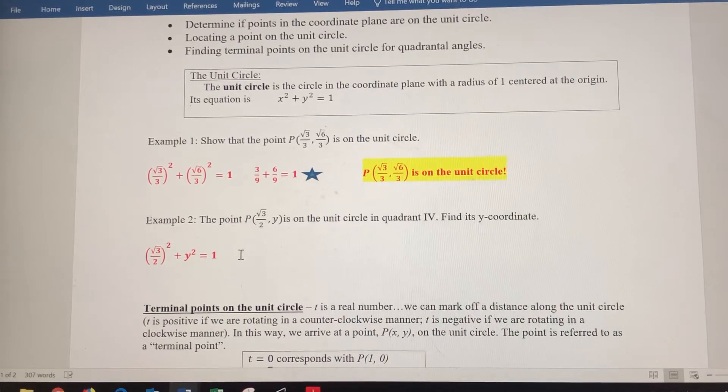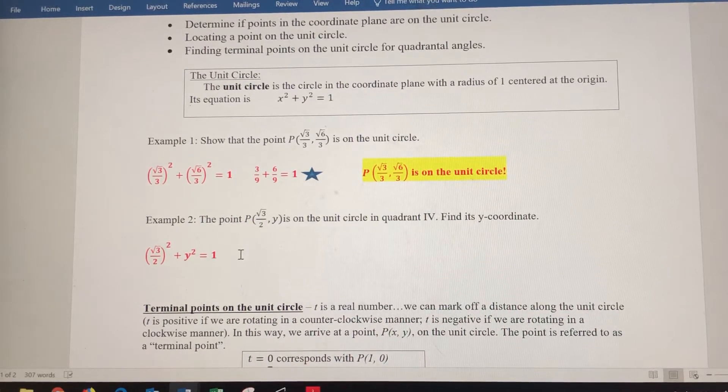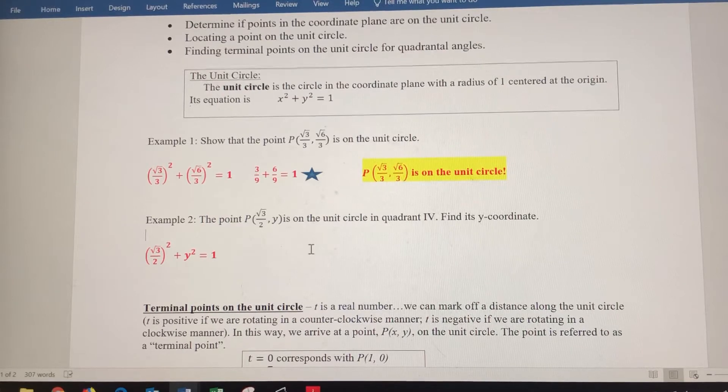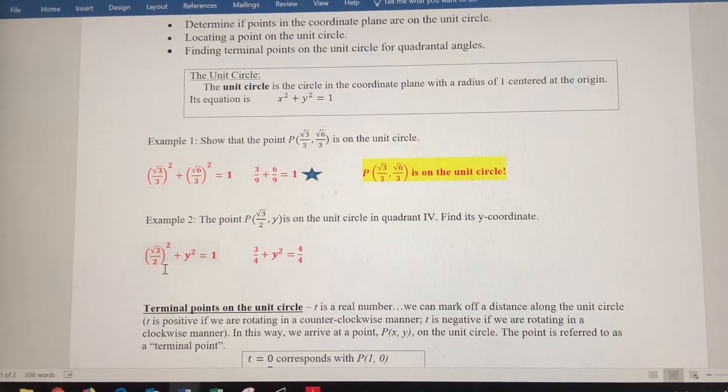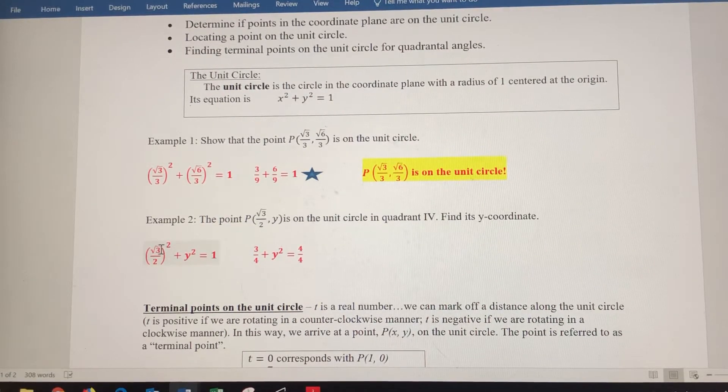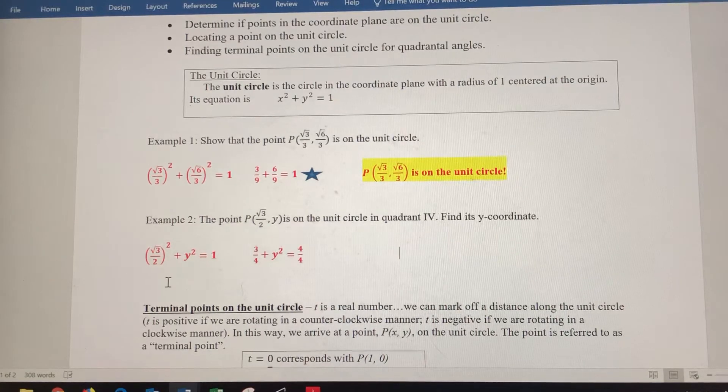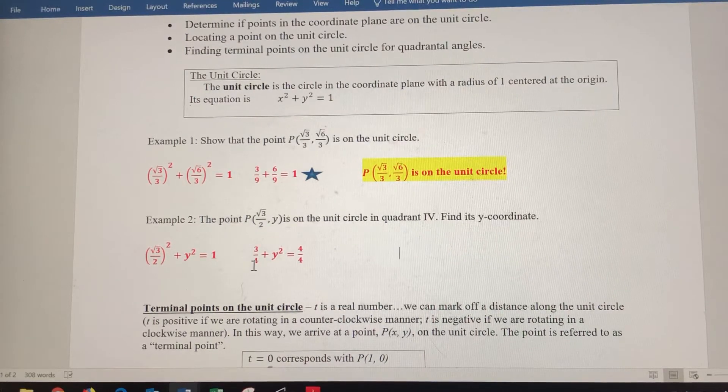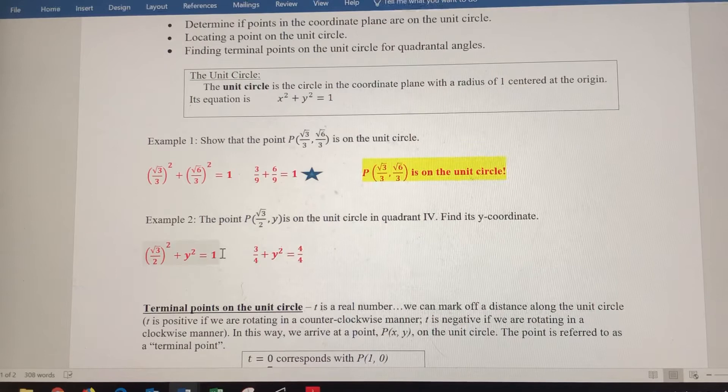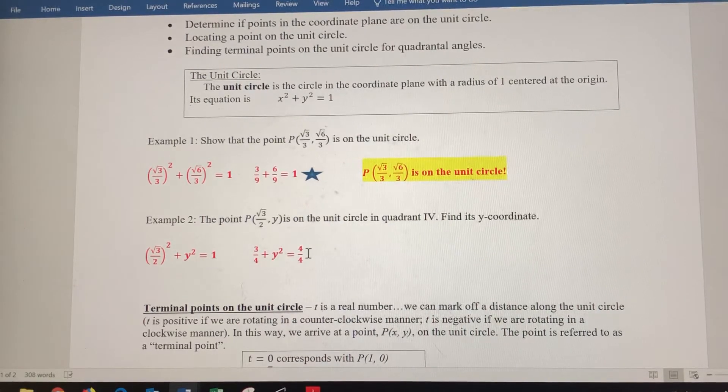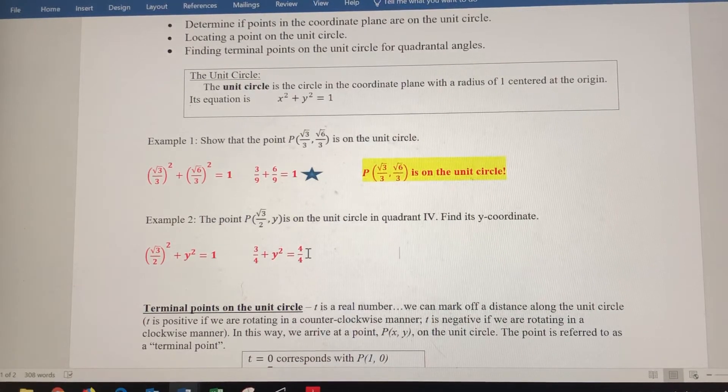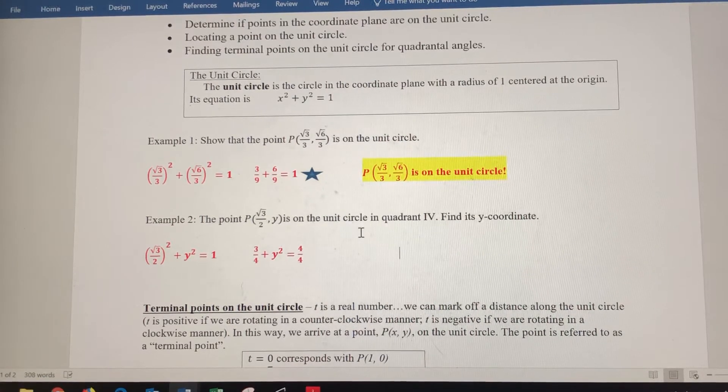All right, I want to simplify, and then I eventually want to get y by itself. So let's square radical 3 over 2 first. So radical 3 times radical 3 is 3. 2 times 2 is 4. I went ahead and converted 1 to a fraction with 4 in the denominator, so it's going to be 4 over 4. We need a common denominator there just to combine those two fractions.